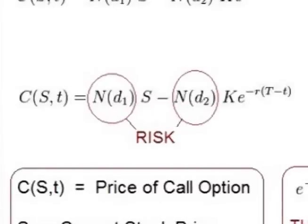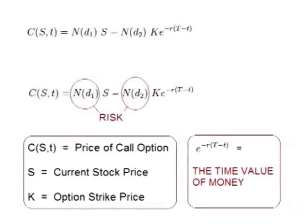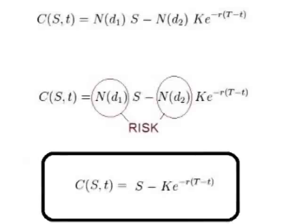ND1 and ND2 explain the movement of price with the risk included. It is the two driving forces of price — the drift rate and the effect volatility has on that drift rate. It is in fact a probability odds calculation based on past price movement, which we will cover in a section on pricing with risk. Therefore, to price an option with the risk removed, we are going to take ND1 and ND2 out of the equation.